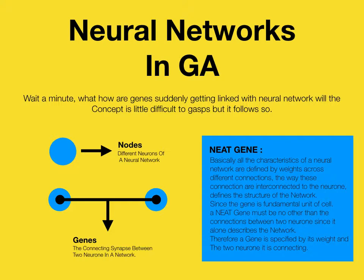For a cell, if we need to alter its behavior, we only need to change the gene. The connections between neurons define the structure of the network — if two connections link to different neurons, the structure completely changes. Similarly, a gene is a connection between two nodes and describes the cell the same way a connection describes a network. Hence, genes and connections between nodes are the same concept — one for a network, another for a cell — and in the NEAT genetic algorithm, we consider them to be the same thing.